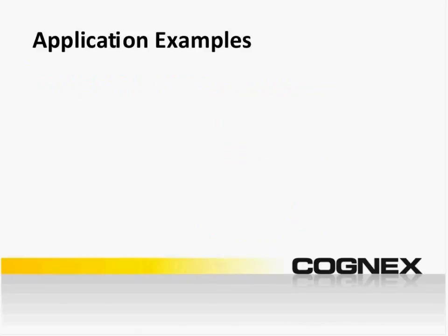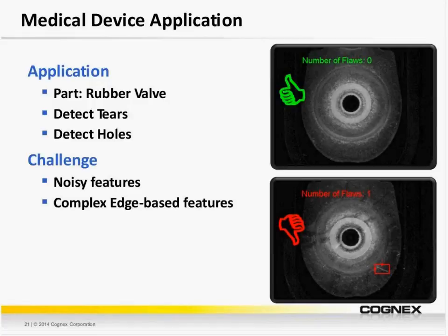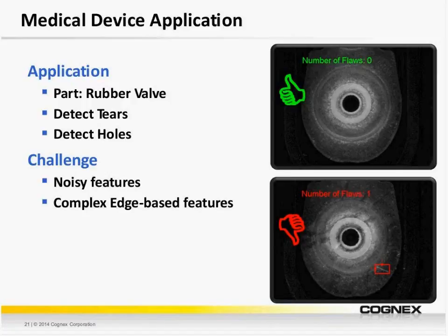Now let's walk through some tangible examples where these tools are used for defect detection. The first application is in the medical device industry — inspecting a rubber valve to detect tears and holes. This is a challenging application because of the surface texture and variation in surface texture, creating a lot of background noise. This would make a traditional blob extraction tool challenging to use. It's tough to rely on perfect lighting in some scenarios, and on the lower image we've got some slight dark streaks on the top of the valve that we want to ignore.